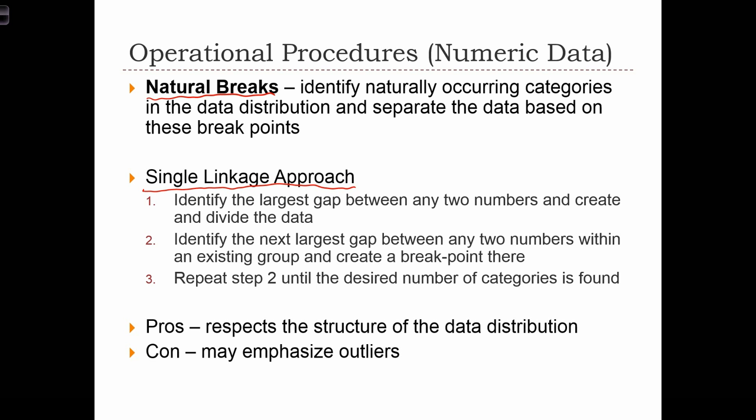In this algorithm, what we're going to do is take our list of numbers and identify the largest gap between any two sequential numbers and create a division in the data at that point. That's going to divide the set of numbers into two different sets, one above the break, one below the break. For each of those two sets, we're going to then find the single largest difference between any two sequential numbers in each set. We're going to keep dividing the data in this way based on finding the single largest distance between two sequential numbers.